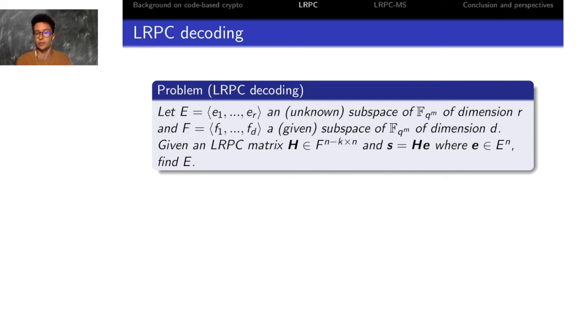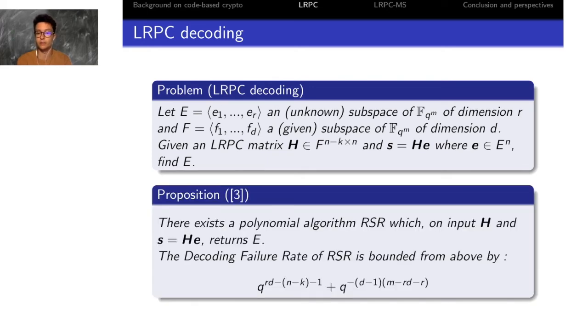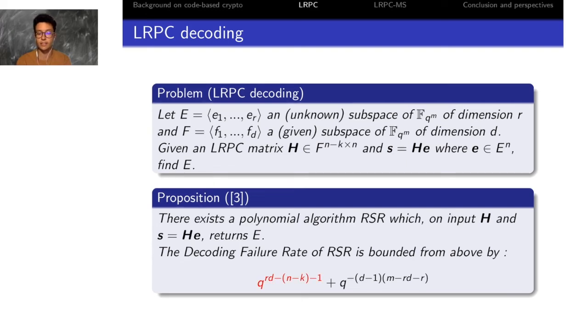In that context, the problem of syndrome decoding with an LRPC code is very easy, because it was proven in previous work that there exists a polynomial algorithm that decodes your syndrome with a decoding failure rate which is bounded from above by the formula printed on the slide. The dominant term of this decoding failure rate is the first one, and you can immediately see that in order to have an acceptable decoding failure rate, you need to have a value for N minus K which is greater than the product R times D.